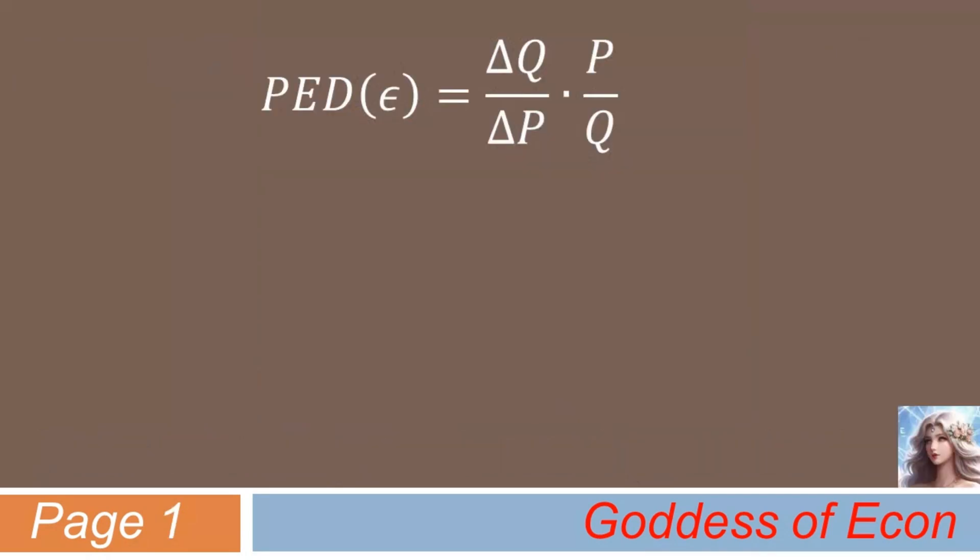Okay, in my last lecture, I have shown that the price elasticity of demand of a good is mathematically defined as delta Q over delta P, times P over Q. The price elasticity of demand is often abbreviated as PED, or is written with Greek letter epsilon.